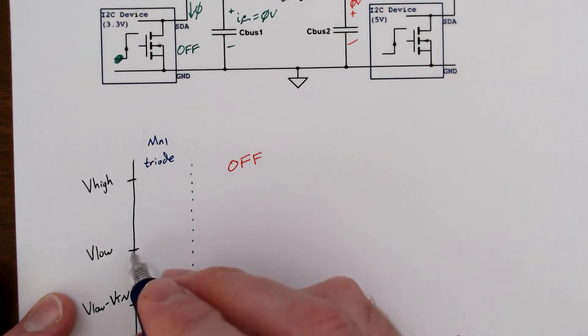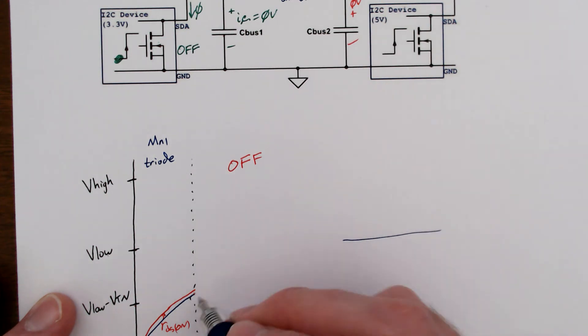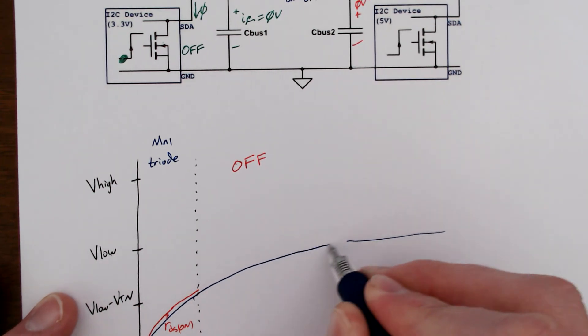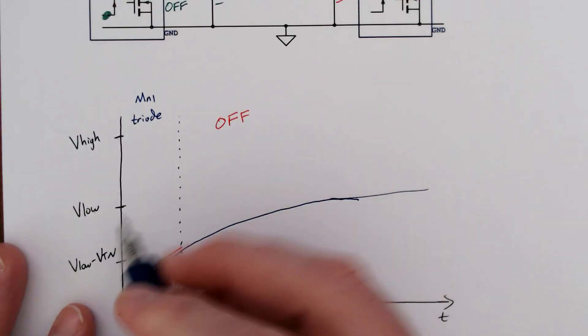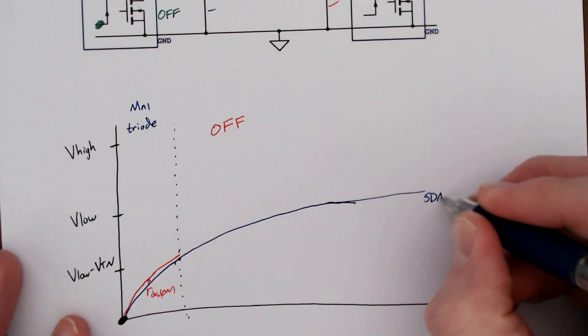So we have this one, V low. Put an asymptote over here. We're going to increase, increase, increase. Our slope will change at this point, but then this would be SDA low.